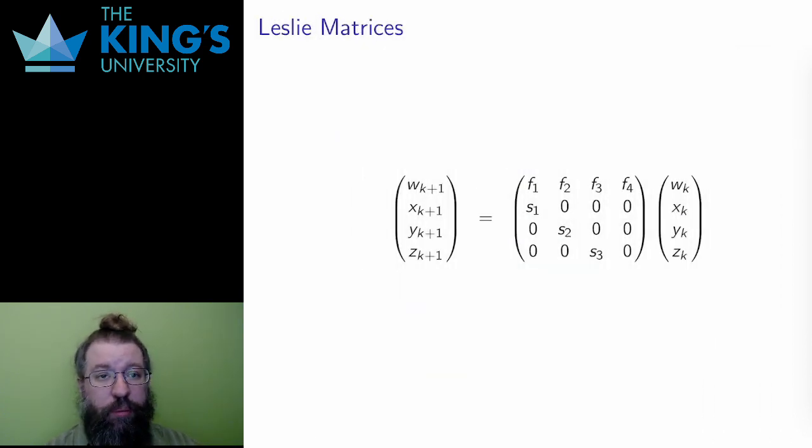A Leslie matrix is a dynamical system that models an age-structured population. To demonstrate, I'll assume that there are four age categories.